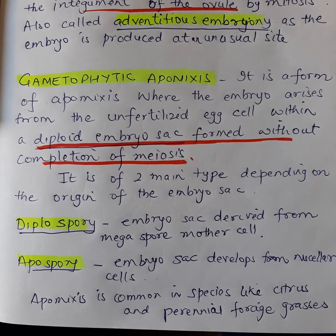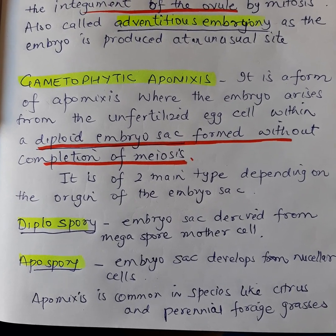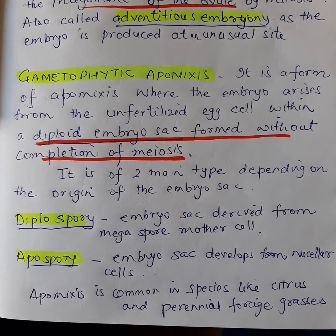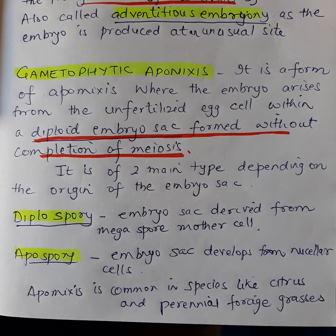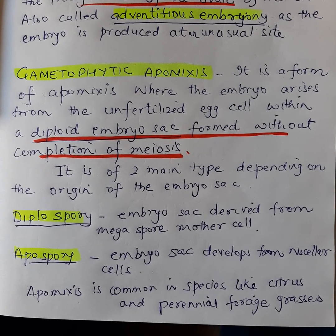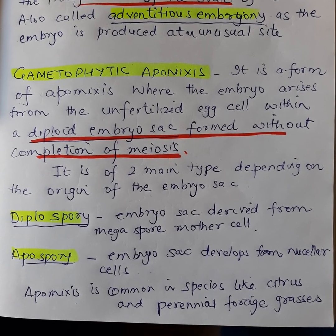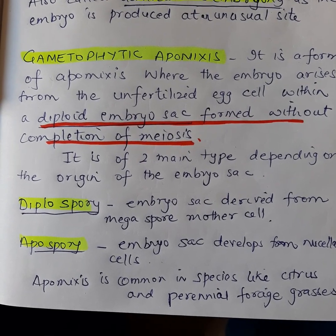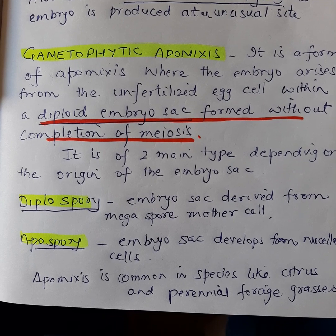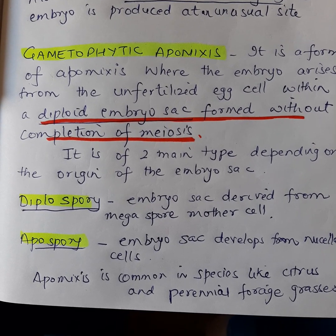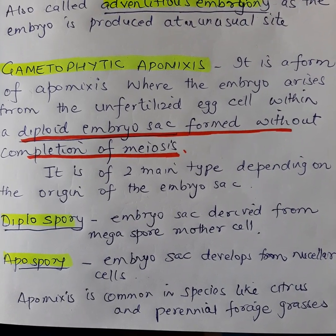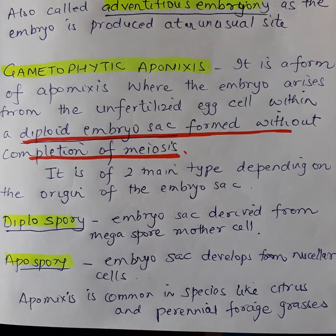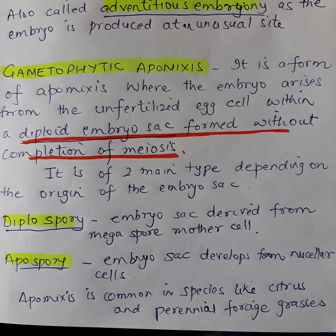In gametophytic apomyxis, the embryo arises from the unfertilized egg cell within a diploid embryo sac formed without completion of meiosis. It is further of two types: diplospory and apospory. Apomyxis is common in citrus and perennial forage grasses.